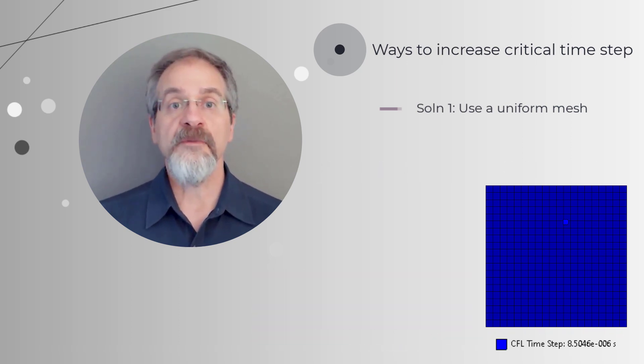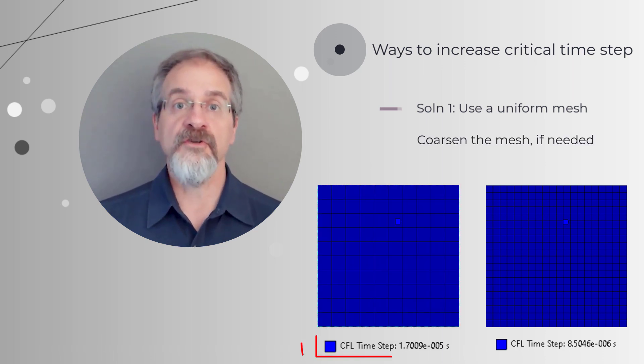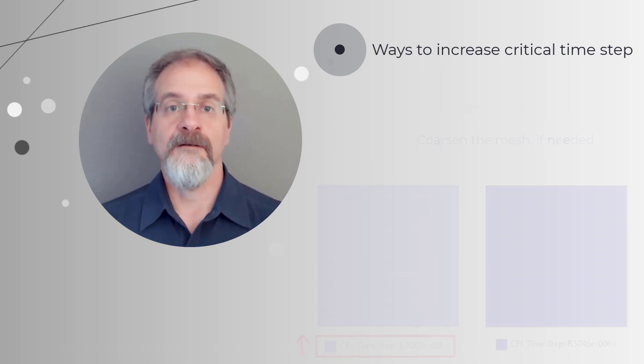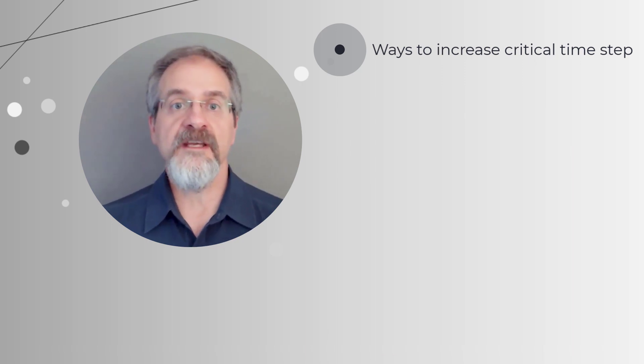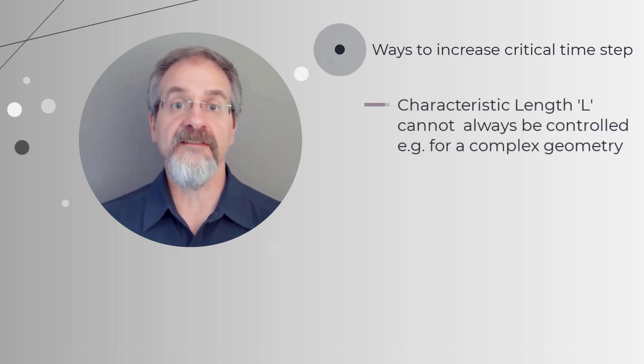If need be, we may have to use a coarser mesh to increase the critical time step. But we may not always be able to control the characteristic length in a model, especially when the geometry is complex.